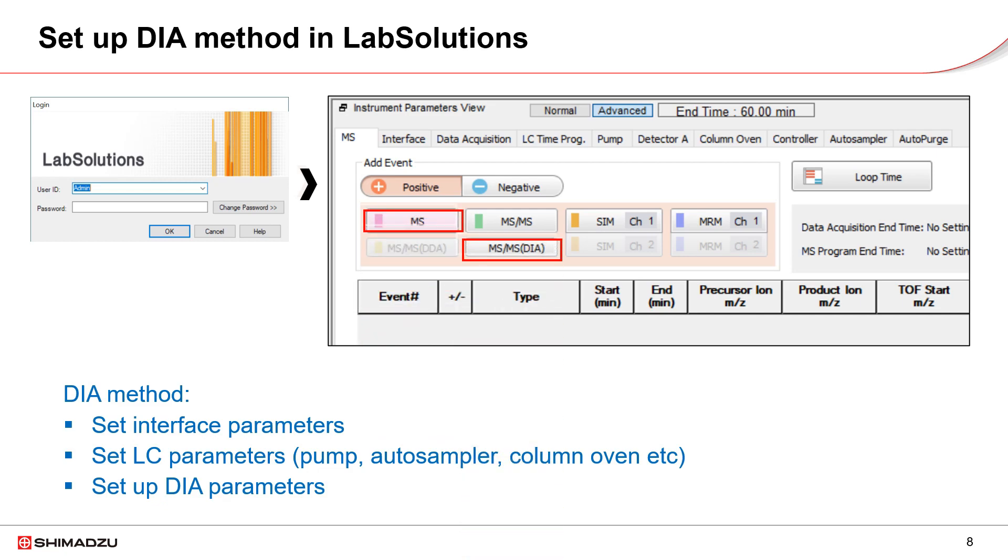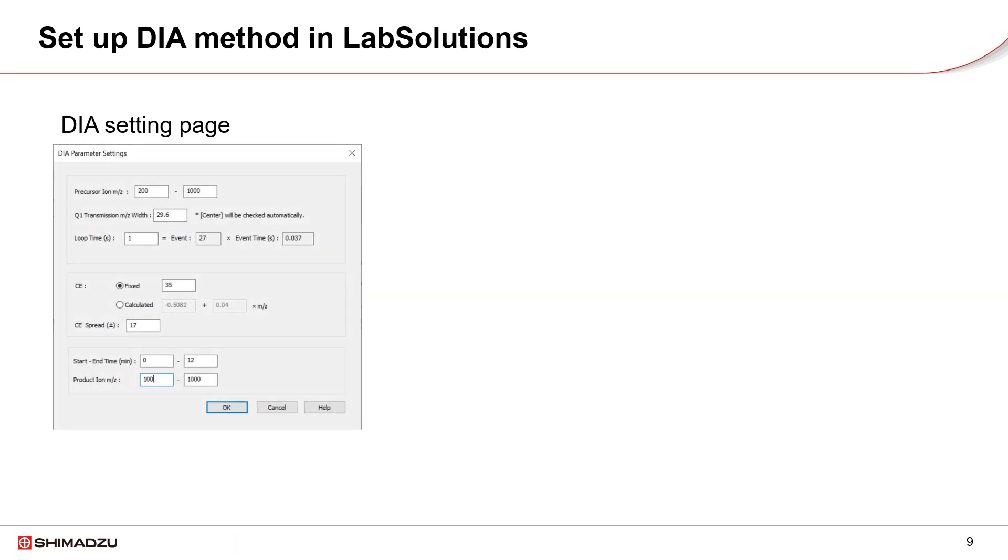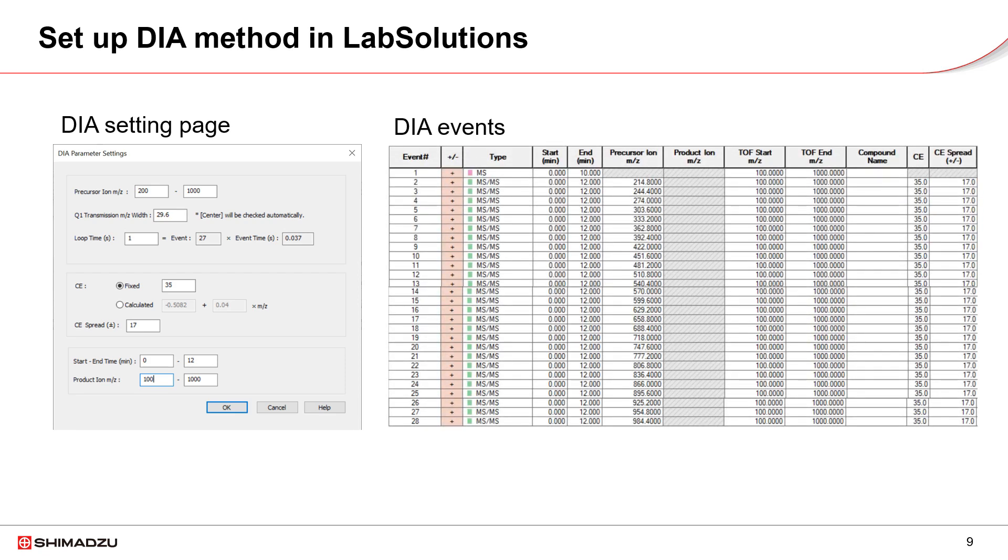We can include MS event, then add MS-MS-DIA event. Fill in all the parameters properly, balance event number, event time and loop time. Usually, the loop time of DIA method should be one second or below in order to acquire enough data points for even a narrow peak. Click on OK button, we get the event details of the DIA method.